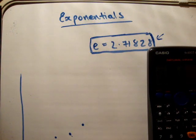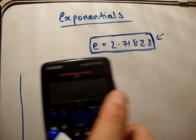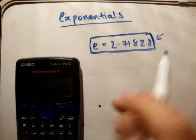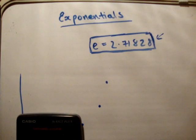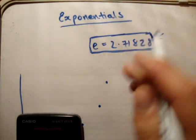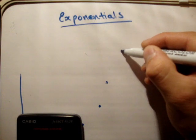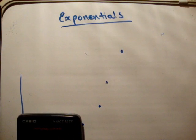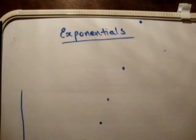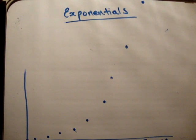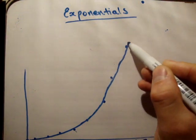e to the 4, 54. e to the 5, 148. We're starting to register now. e to the 6, 403. e to the 7, 1,096. e to the 8, 3,000. e to the 9, 8,000. So join those together, and that is the graph that y is equal to e to the x.